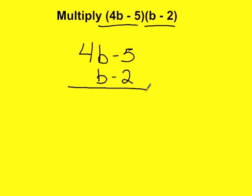And all I do is I'm going to multiply. So negative 2 times negative 5 would be positive 10. Negative 2 times 4b would be negative 8b. Then, I'm done with this part. I'm going to multiply the b now.